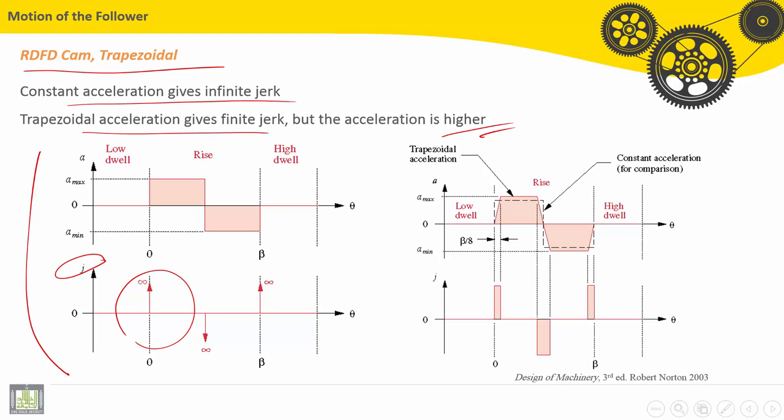Trapezoidal acceleration gives finite jerk, but the acceleration is still high. If you can see here, this sudden increasing or decreasing of acceleration includes finite value of jerk. Then if we include here a small or a defined slope,